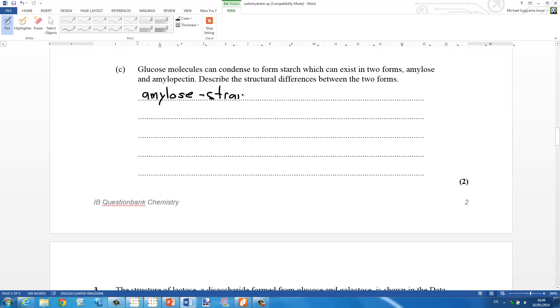The next one is about amylose and amylopectin. Again, it's the same answer. So amylose is a straight chain polymer with alpha 1,4 glycosidic links. And then amylopectin is a branched chain polymer with alpha 1,4 and alpha 1,6 glycosidic links.